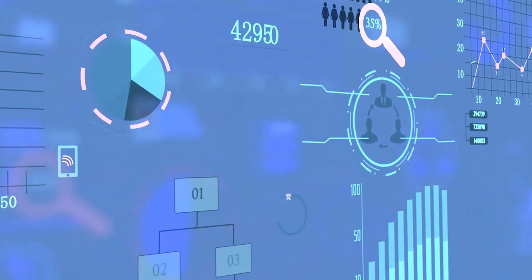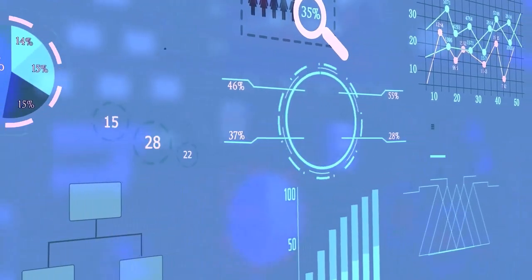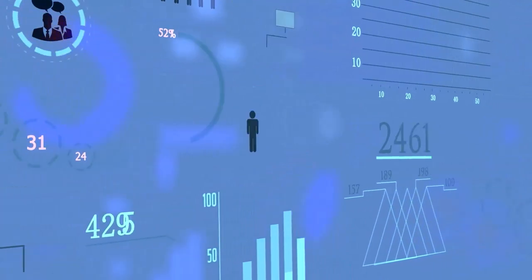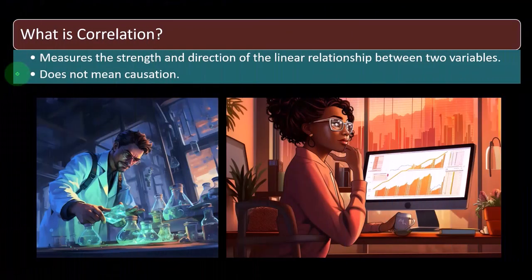So note that if there is a correlation, it doesn't necessarily mean that there's a cause and effect relationship. However, if there is a cause and effect relationship, you would think we would be able to find a correlation.